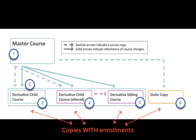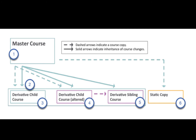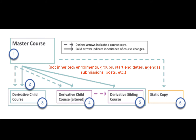Once you create a derivative course, you no longer have access to any enrollment data that happens to exist in the master. The derivative courses begin as duplicates of the master course. Data that is related to teaching a specific course — like student enrollments, groups, titles, start-end dates, agendas, submissions, and posts — is not inherited.